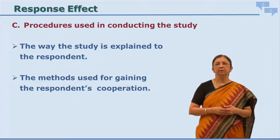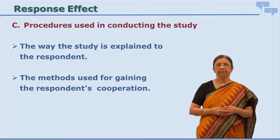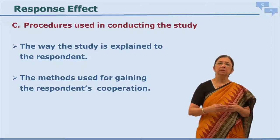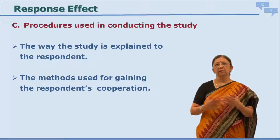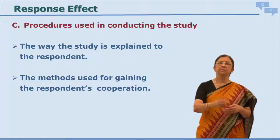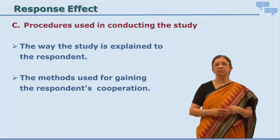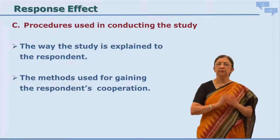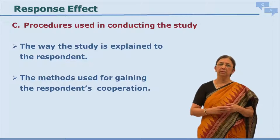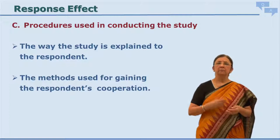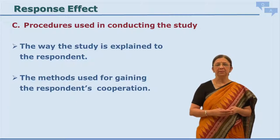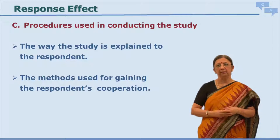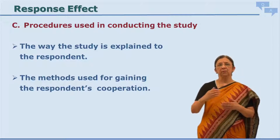The third aspect that affects the response is the procedure used for conducting the study. One important thing is how the study is explained to the respondent — what it is about, what the objectives are, why it is being conducted, and why their response is important. If the respondent does not understand the importance or relevance, the responses may not be of great use for the researcher. The methods used for getting respondents' cooperation are also important.